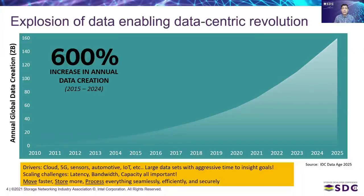We have seen our customers struggle with these new challenges at scale. Ensuring a trusted, stable, and reliable experience can be challenging. Workload demands are changing dynamically, impacting performance, memory, and storage needs. This is resulting in stranded or overtaxed resources and the inefficient use of data center capacity. For example, a server may have unused memory while another server in the data center could have used more memory to service a virtual machine with a higher memory footprint. We have to meet these scaling challenges of latency, bandwidth, and capacity.